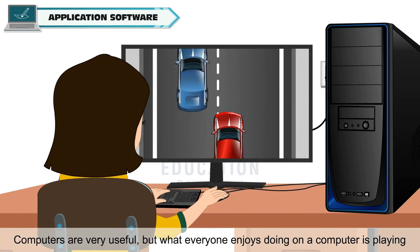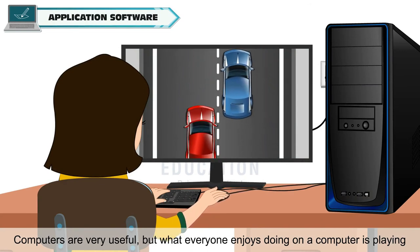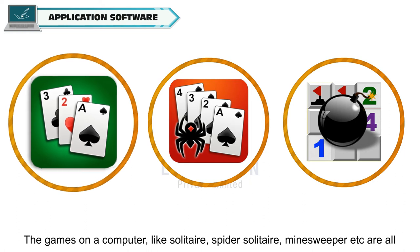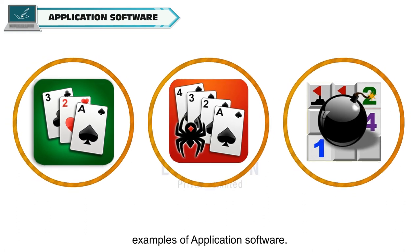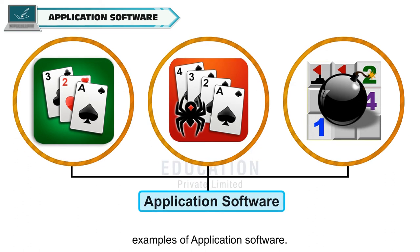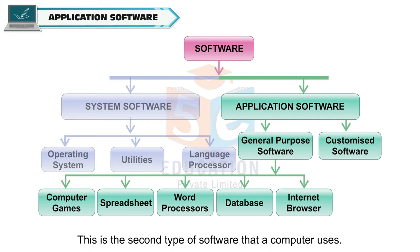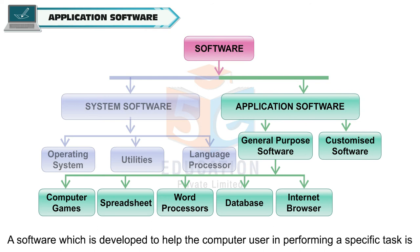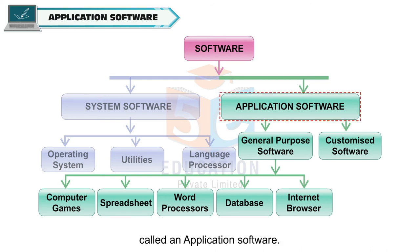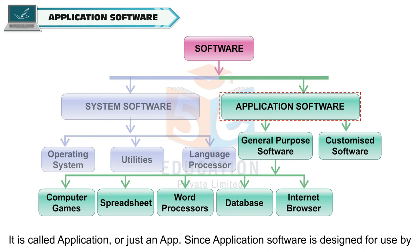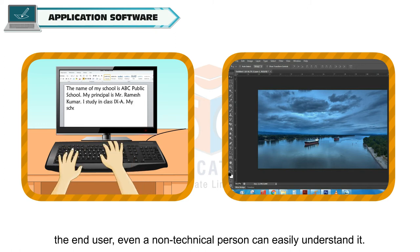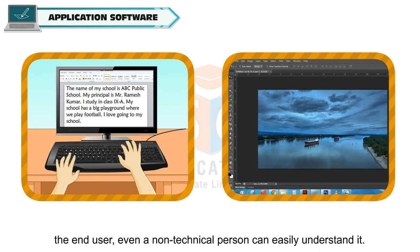Computers are very useful but what everyone enjoys doing on a computer is playing games. Games on a computer like Solitaire, Spider Solitaire, Minesweeper, etc. are all examples of application software. This is the second type of software that a computer uses. A software which is developed to help the computer user in performing a specific task is called an application software. It is also called an application or just an app. Since application software is designed for use by the end user, even a non-technical person can easily understand it.